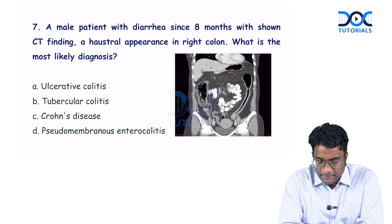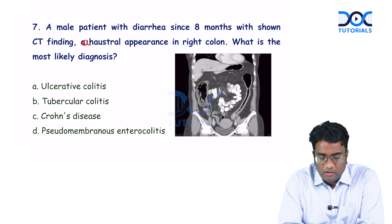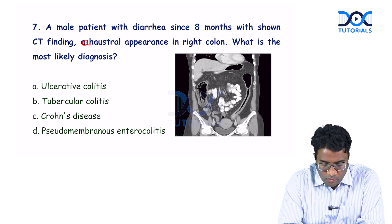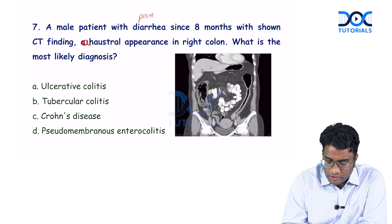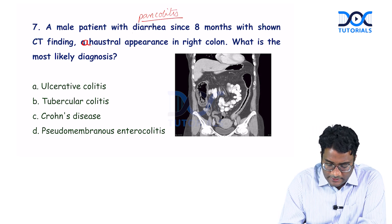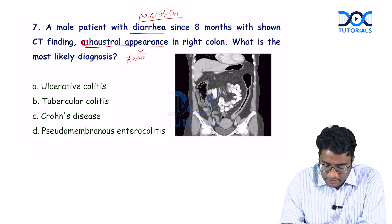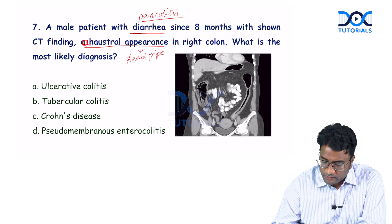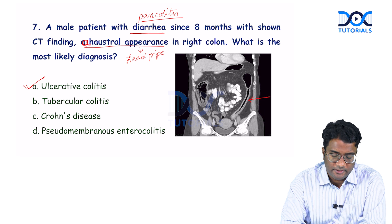Next question: a male patient with diarrhea for 8 months shows an ahustral colon on CT scan — ahustral appearance without any haustration in the right colon. With pancolitis and ahustral loops in the colon, this is called lead pipe appearance. This lead pipe appearance with absent haustral loops indicates ulcerative colitis.